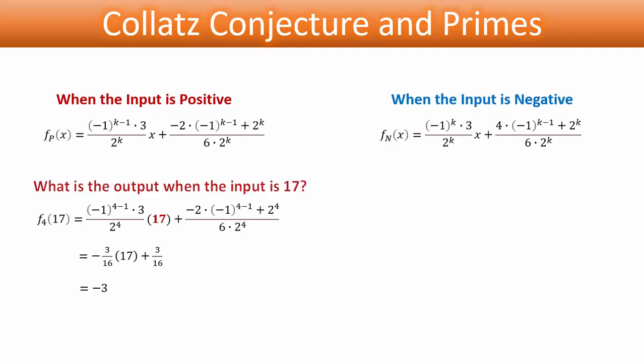and there can only be one value of k that will correspond to each input number. The value of k that will give us an integer output is 4. We do that, we calculate, we get negative 3.